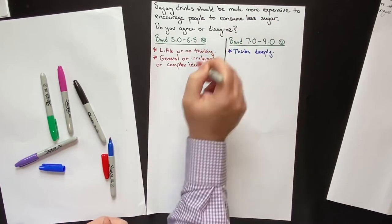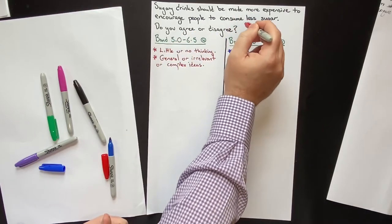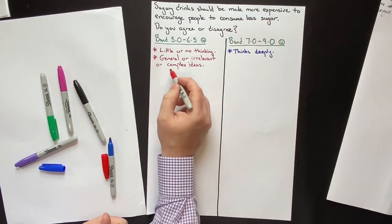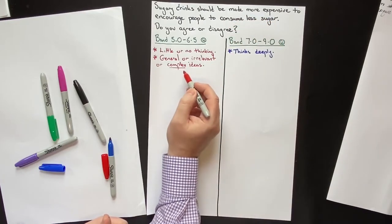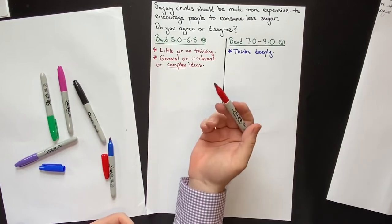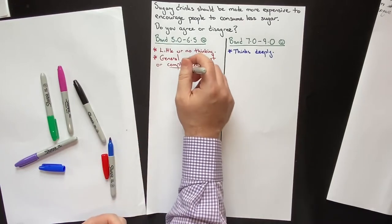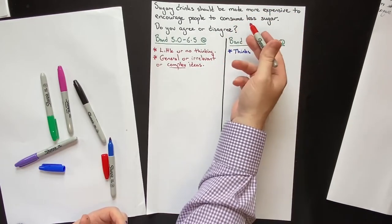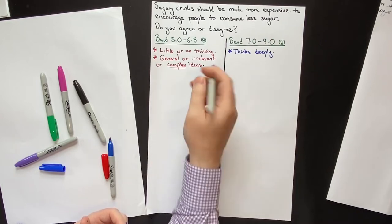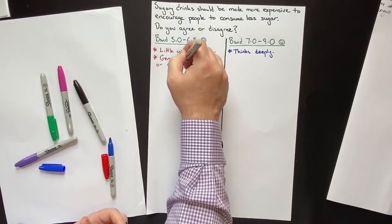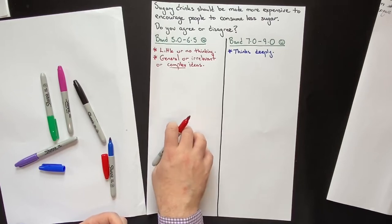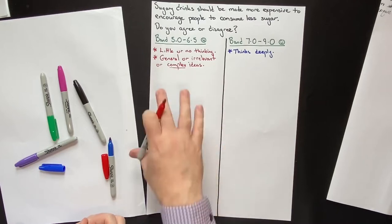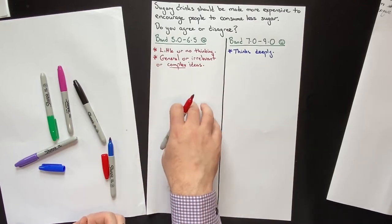They'll write everything they know about sugary drinks, sugar, and health without focusing on the topic. Very similar to irrelevant ideas — if they haven't understood the question, they generate ideas that don't answer it. This is very common with intelligent students — doctors, engineers, lawyers — who try to think of the most complex or impressive idea. But if you start with a complex idea, it will be difficult to explain, difficult to find examples for, and will produce a complex, difficult-to-understand essay, which leads to failure.